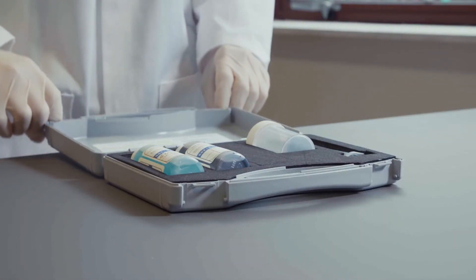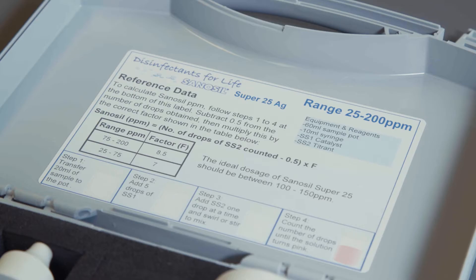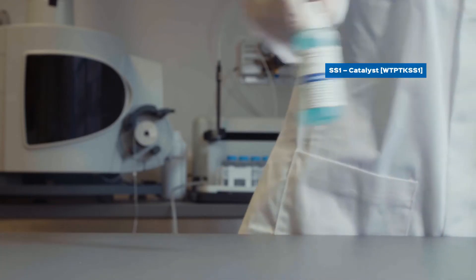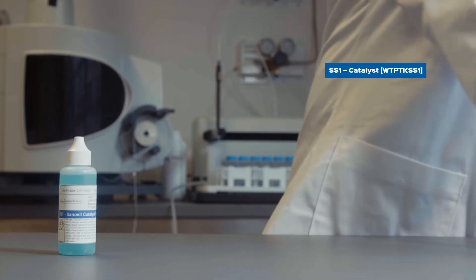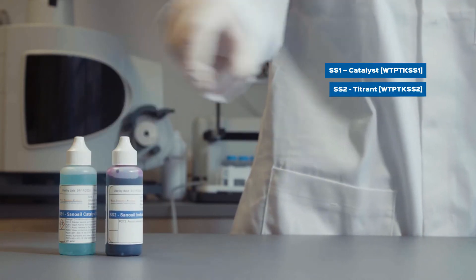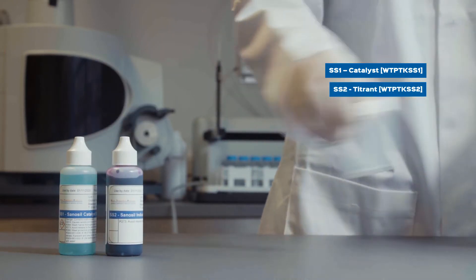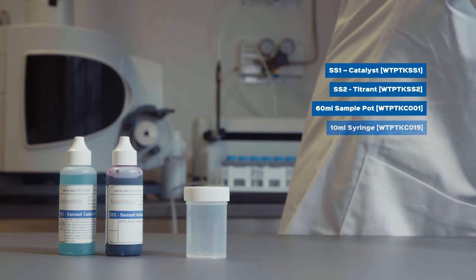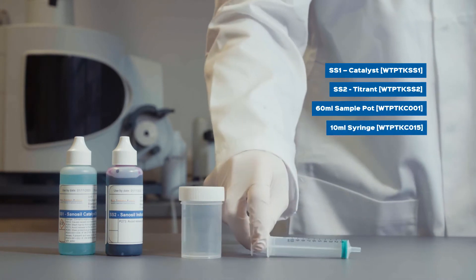The test kit contains all equipment and instructions necessary for undertaking a Sanosil Super 25 test. The kit consists of SS1 catalyst, SS2 titrant, a 60 milliliter sample pot, and a 10 milliliter syringe.